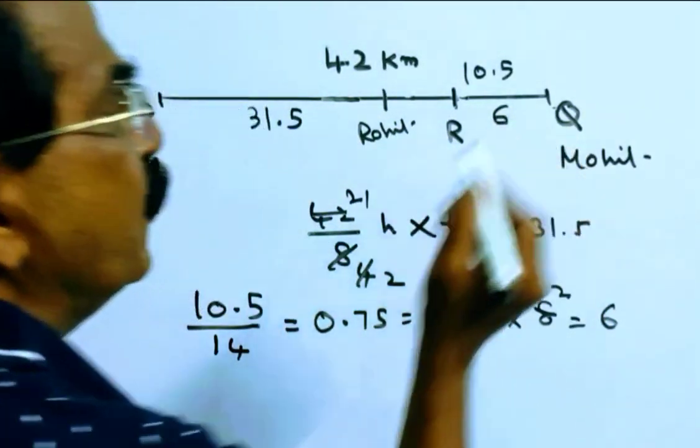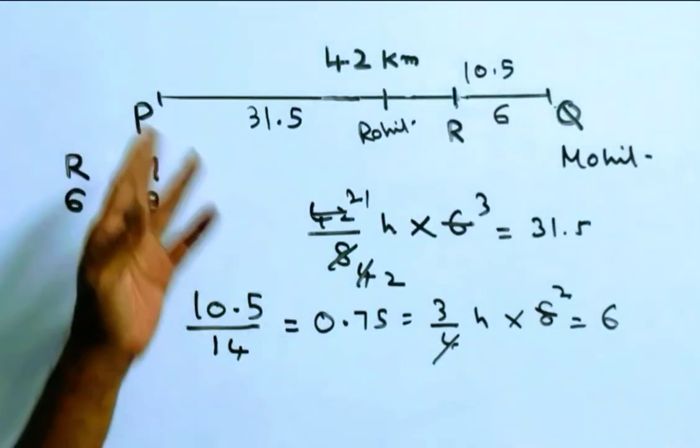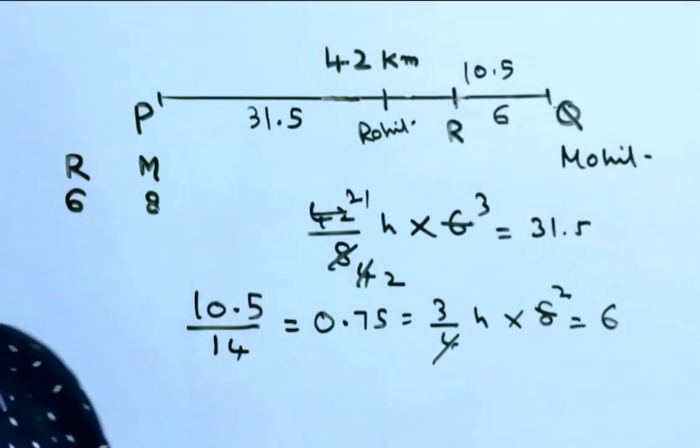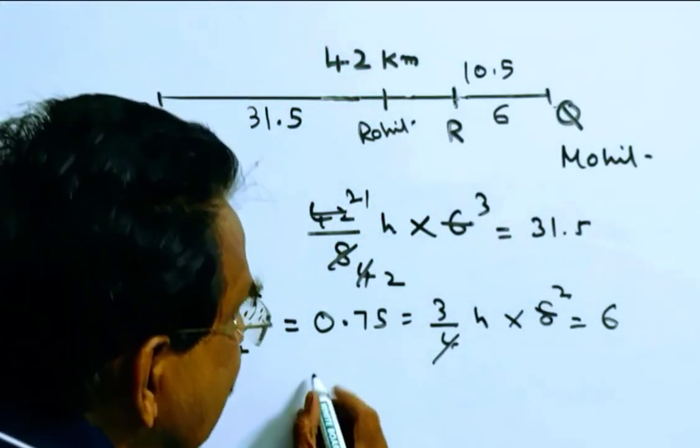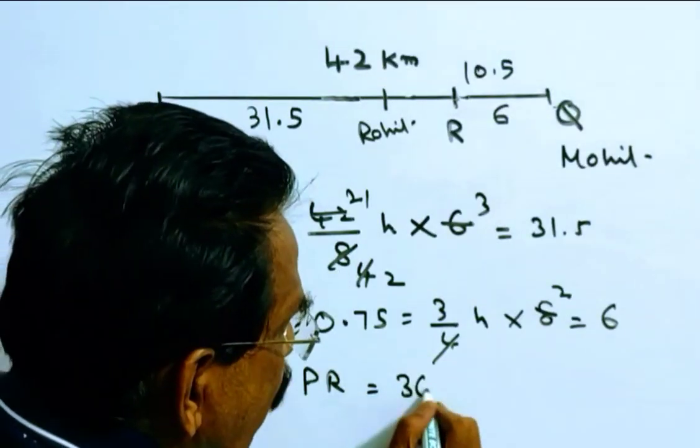Friends, the distance between Q and R is 6 km. So we want the distance between P and R: 42 minus 6, that is 36 km. PR is equal to 36 km.